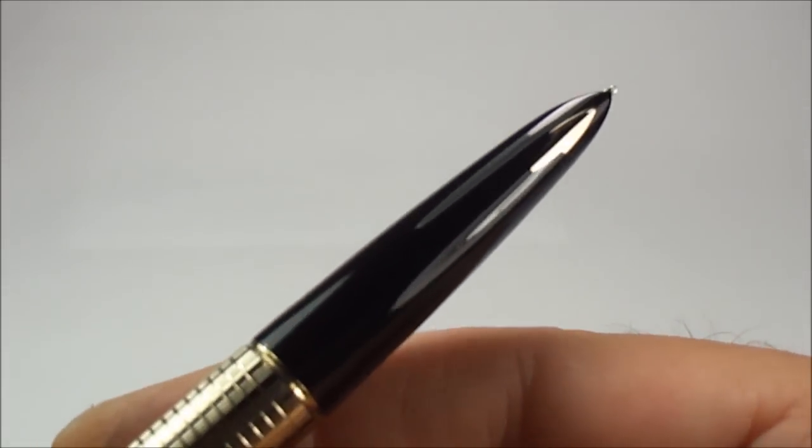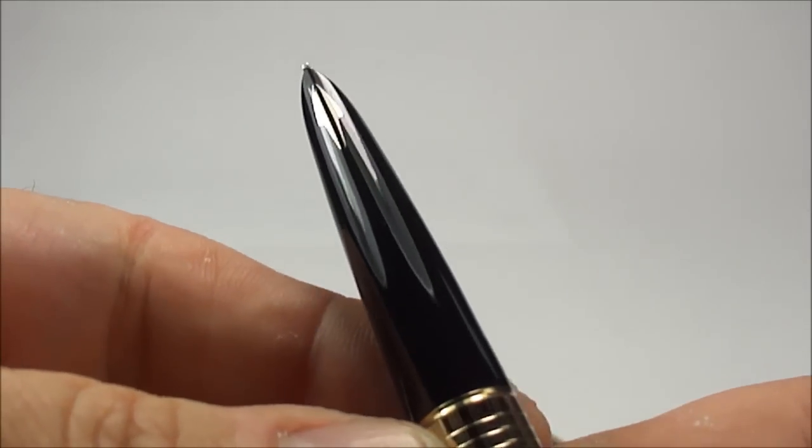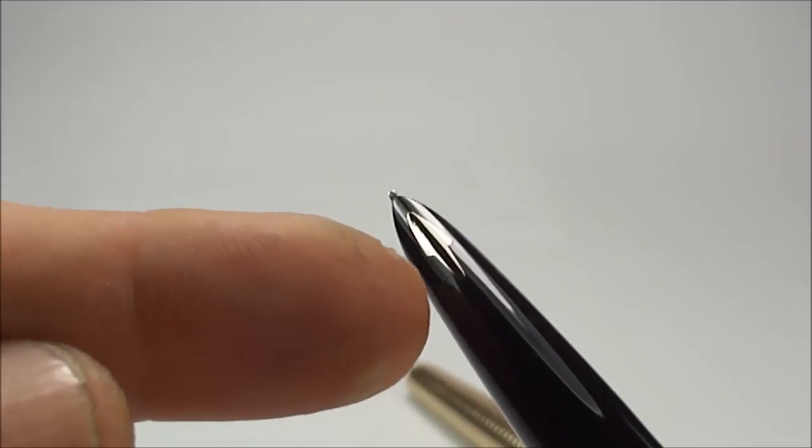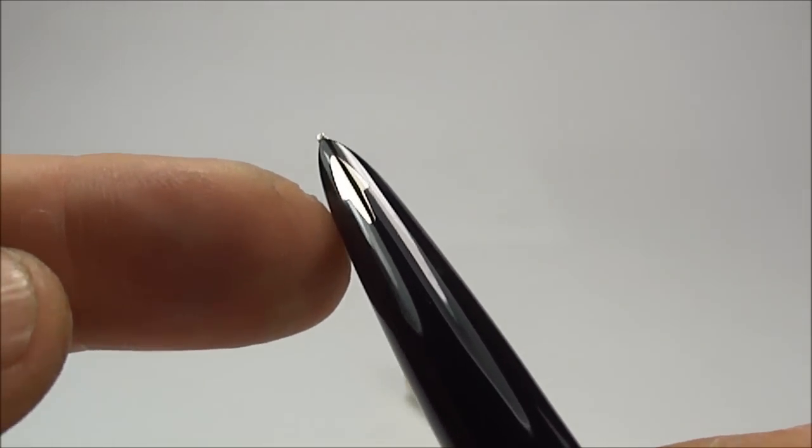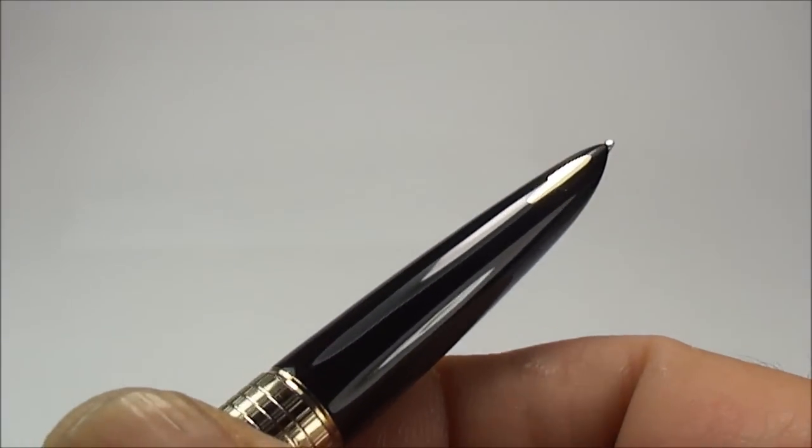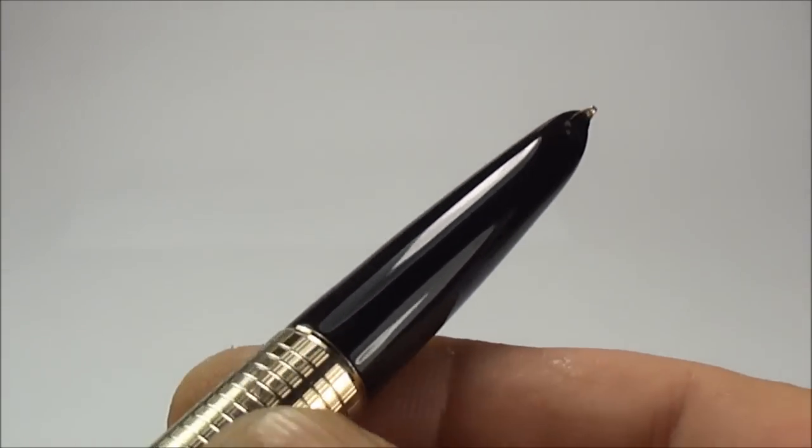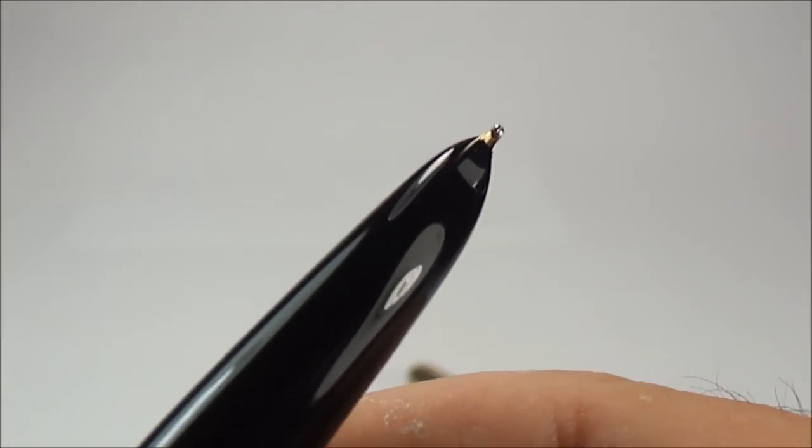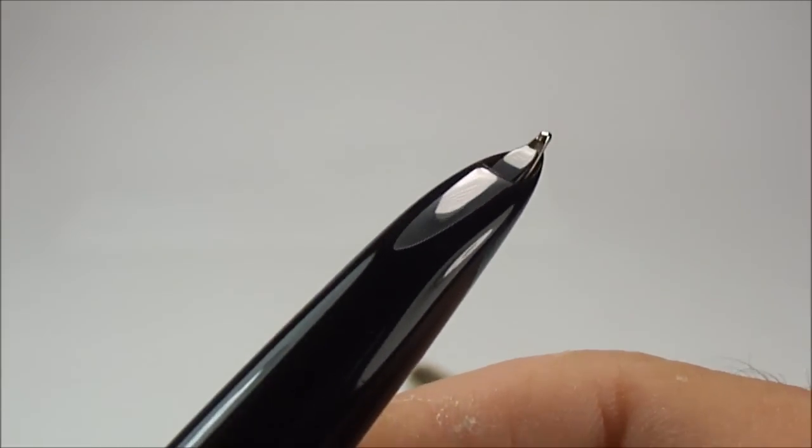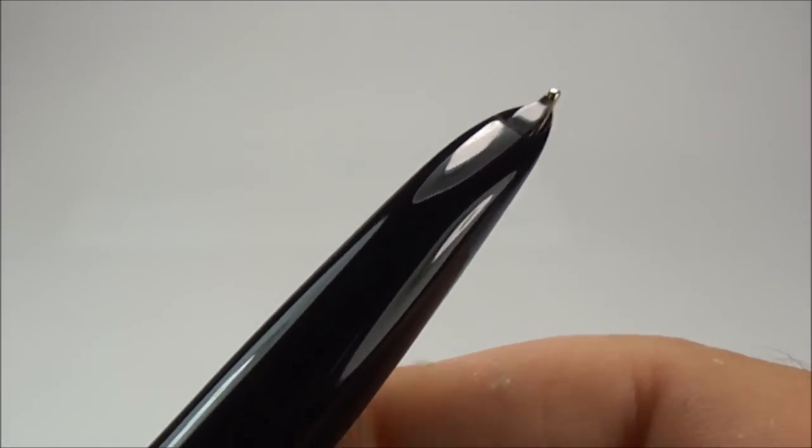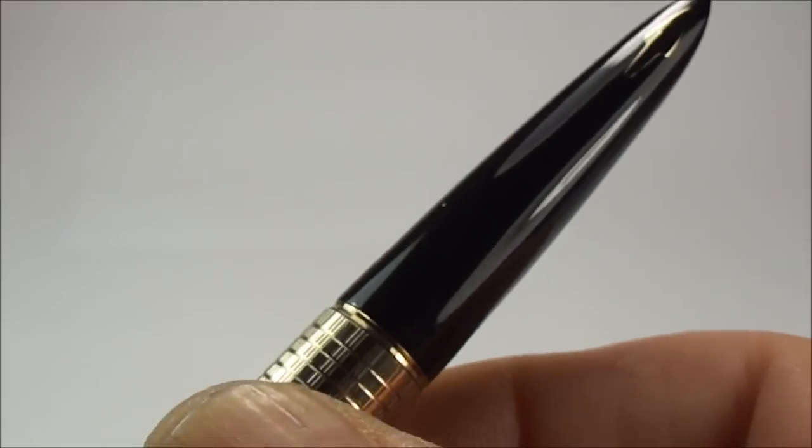Here we have the section. I'm hoping you can see to the bottom of this section we've got the inlaid gold arrow as it should be, and it's lovely and clean. Let me show you the feed. The feed is absolutely lovely and clean.